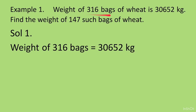It is all from the question — weight of 316 bags, that is what I have written here, and the weight is 30652 kg. Now let us read the question: find the weight of 147 such bags of wheat. They have given us the weight of 316 bags and we have to find out the weight of 147 such bags. So first we will find out the weight of 1 bag. Weight of 1 bag is going to be less than weight of 316 bags, so we will divide to get the answer.